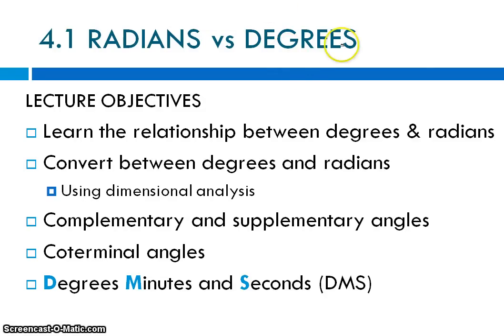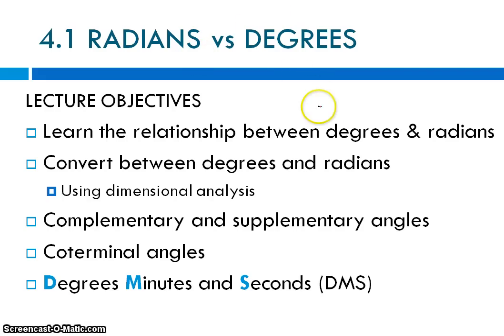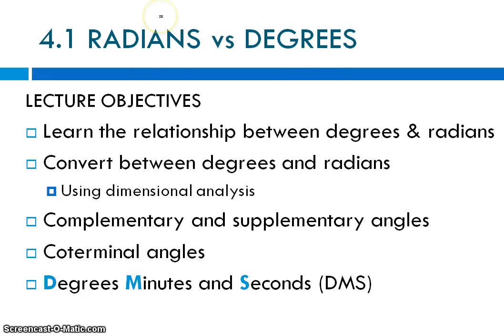Today we are going to talk about degrees, which is a way to measure an angle, and another way to measure an angle, which is radians. It's equivalent to having measures of length in centimeters or inches — just two different ways of measuring a length. We've only done degrees so far, but trigonometry is all about the other way, which is radians.